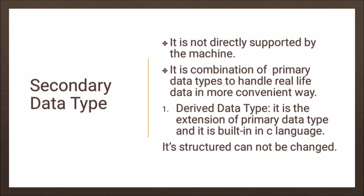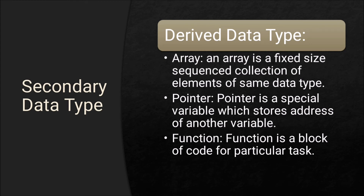The first secondary type is derived data type. It is the extension of primary data type and its structure cannot be changed. There are three types of derived data type: array, pointer, and function. An array is a fixed-size sequential collection of elements of the same data type. A pointer is a special variable which stores the address of another variable. A function is a block of code for a particular task.